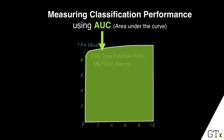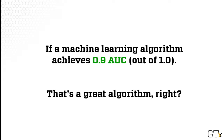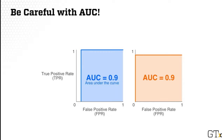AUC very literally means taking the area under the ROC curve, which is the green area shown here. There are some important points to note when using AUC. For example, if someone tells you a machine learning algorithm achieves a 0.9 AUC score out of a maximum of one, would you say it's a great algorithm because it's very close to one? You should be very careful. Here we're showing two curves that both have AUC 0.9. On the left, to achieve a 100% true positive rate, you need a 10% false positive rate. On the right, you have zero false positives, but you can only get up to 90% true positive rate.